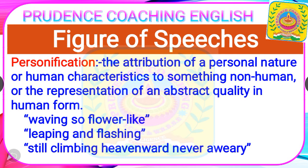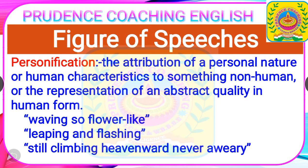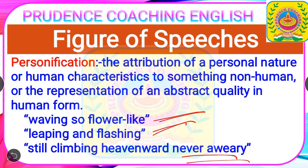Next is personification — the attribution of human characteristics to something non-human. Examples from the poem include 'waving so flower-like,' 'leaping and flashing,' and 'still climbing,' where the fountain is treated as a living entity, like a human or a child.